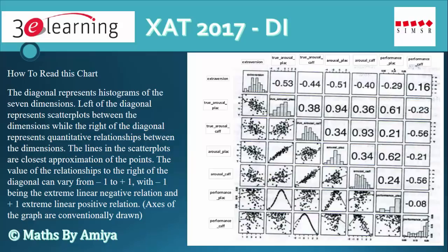We have seven dimensions in the 7x7 matrix. The diagonal part always talks about the individual scores — like extraversion to extraversion, which gives the total data about extraversion. Similarly, true arousal plaque versus true arousal plaque is the individual data. So the diagonal data is all about individual data, and the others are nothing but the relations between dimensions.